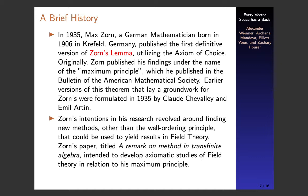Before we explain our proofs, we're going to go over a brief history to give some context for how this all came to be. In 1935, a German mathematician named Max Zorn, born in Krefeld, Germany, published his first definitive finding — what we know today as Zorn's Lemma — but he published it under the name the maximum principle, using the Axiom of Choice. He published it in the Bulletin of the American Mathematical Society.